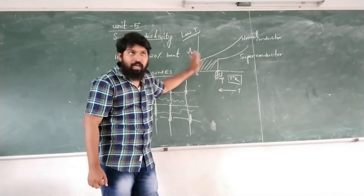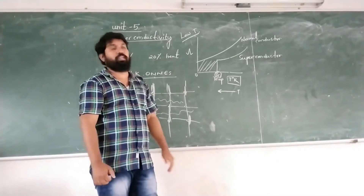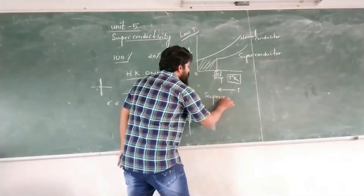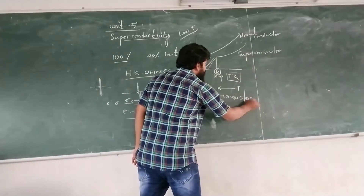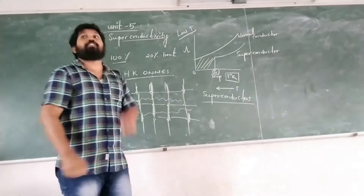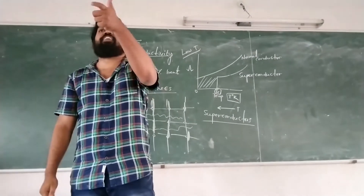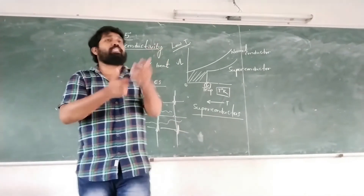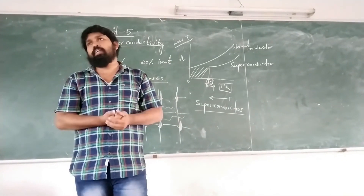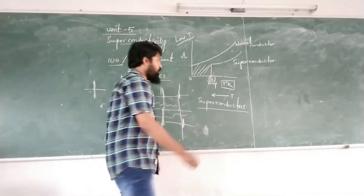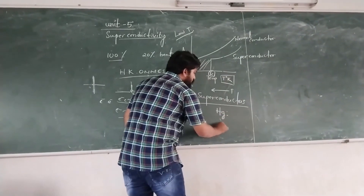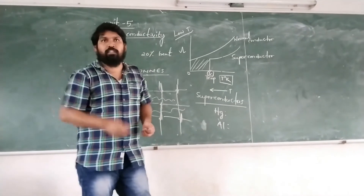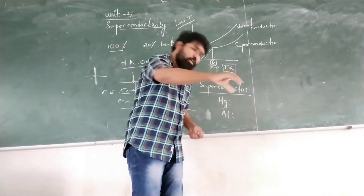Superconductivity is the phenomenon in which the electrical resistance of a material or metal or alloy suddenly falls to zero below its critical temperature — that we call superconductivity. The second definition: superconductors. The substances which exhibit the superconductivity phenomenon are called superconductors. For example: mercury, aluminium, zinc, and tin — we call these superconductors.